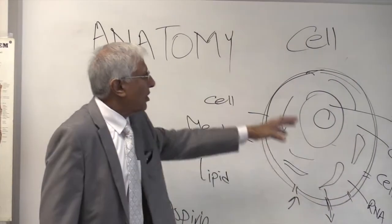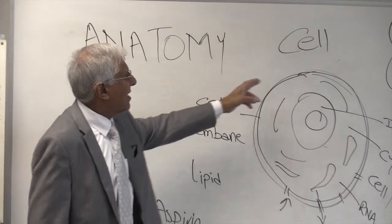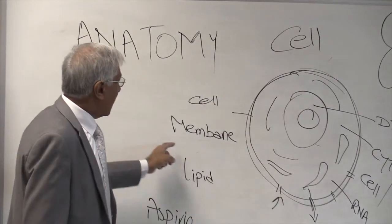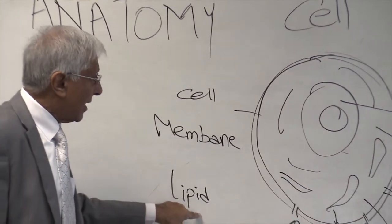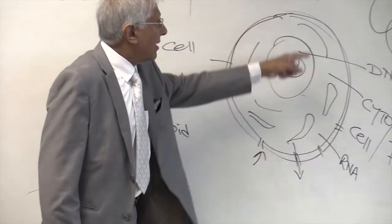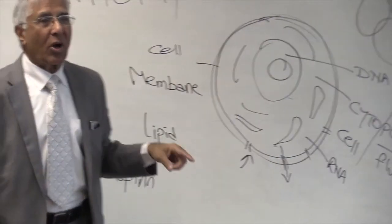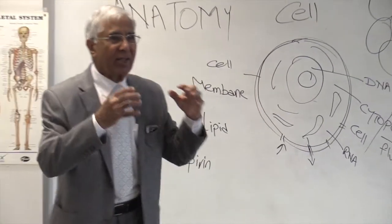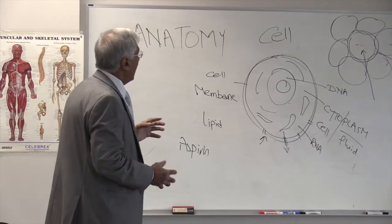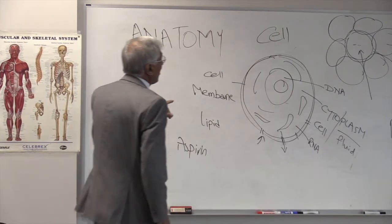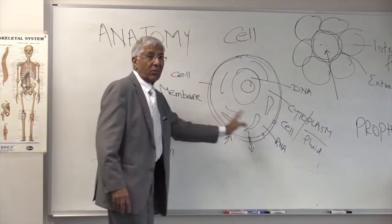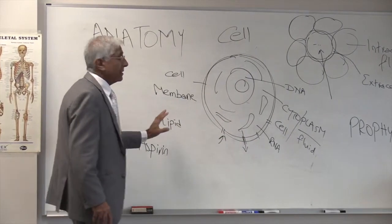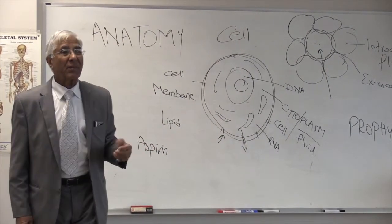This is the structure of a cell. A typical cell is circular. It has a cell membrane made of lipid — lipid is fat. This membrane is the protective wall; it keeps the cell together. Once the cell is broken, all the organelles — the contents of the cell — are spilled. This is what happens in the case of an injury.